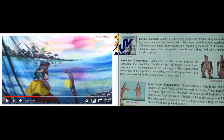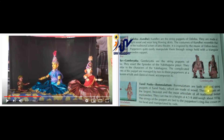Tamil Nadu Bommalatam - what is this? Bommalatam are both rod and string puppets. These are both rods and strings, and they are made of wood. These puppets are the largest, heaviest and most articulate of traditional Indian marionettes. They can rise to a height of 4.5 feet.